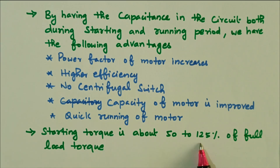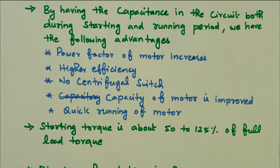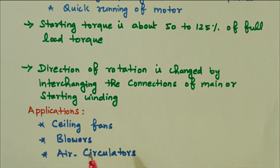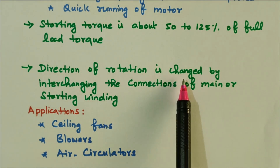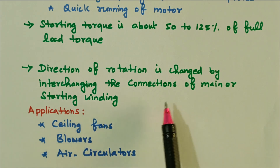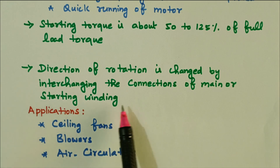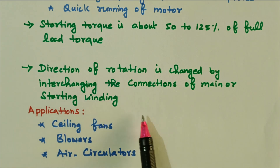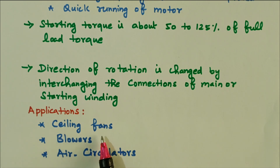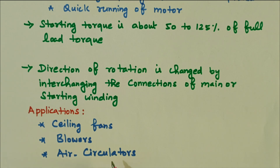The starting torque is approximately 125 percent. The direction of rotation is changed by interchanging the connection of the main or starting winding — if you reverse either winding, the direction of rotation is also reversed. Applications include ceiling fans — in the ceiling fan, a capacitor is present and remains connected during running — as well as blowers and air circulators.